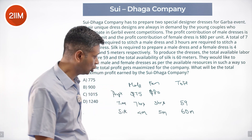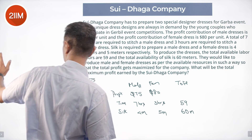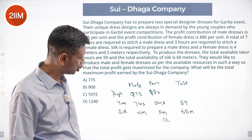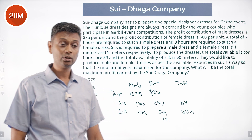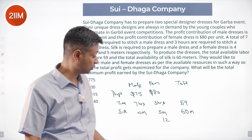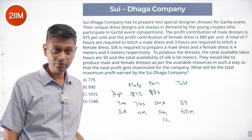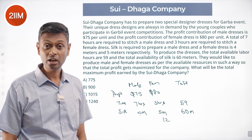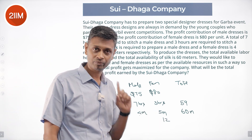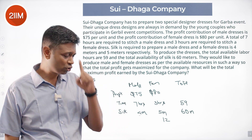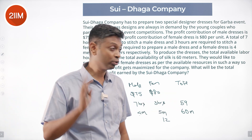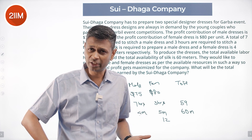Starting from 12 female dresses: 12 into 3 is 36 hours used, leaving hours free since I've run out of cloth. Those free hours could be used to produce male dresses instead. My first instinct was to produce more and more female dresses since it only takes three hours — 59 divided by 3 gives more than 19 units — but the silk constraint limits it.